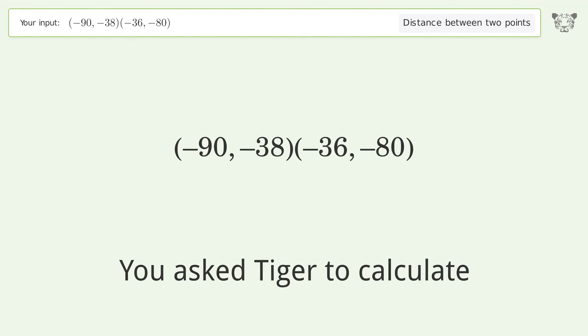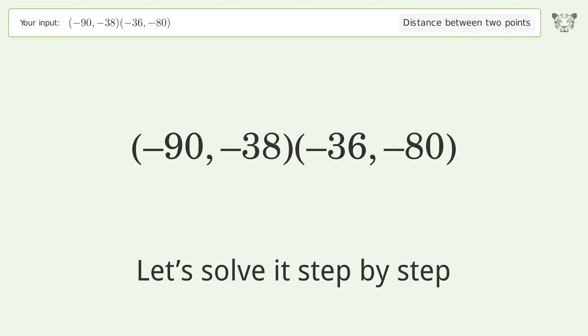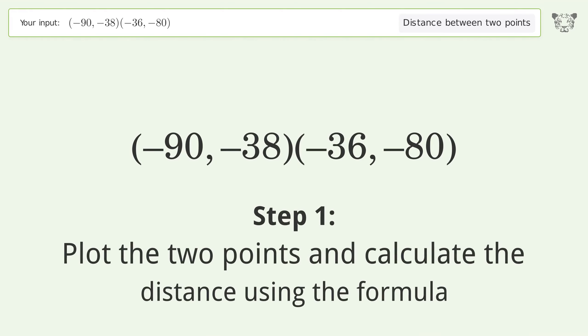You asked Tiger to calculate the distance between two points. The distance is the square root of 4680, or 68.411. Let's solve it step by step: plot the two points and calculate the distance using the formula.